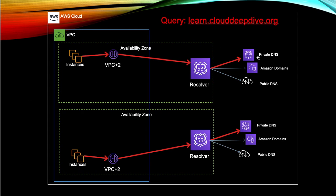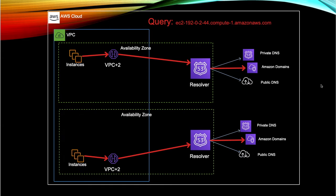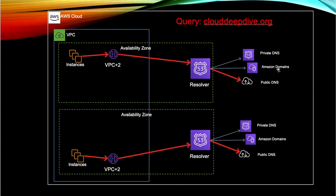The way it does that: if any query is related to your private hosted zone — for example, if in Route 53 you have a private hosted zone and you're querying for lan.cloudDeepdive.org and it belongs to your private hosted zone — it will be answered by Route 53 Resolver from that private hosted zone. If the query is for an EC2 instance IP address, which is the Amazon-provided DNS domain, it will be resolved from there. If it's not found in private DNS or Amazon domains, then it goes to the public DNS for a recursive lookup against public name servers.